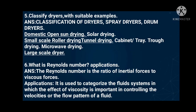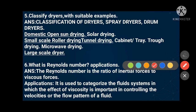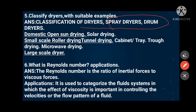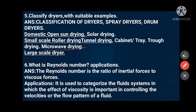The fifth question: classify dryers with suitable examples. Classifications include spray dryers and drum dryers, which are used to dry wet materials. For domestic and small-scale use: open sun drying (solar dryer), tray dryer, tunnel dryer, and microwave dryer. Large-scale dryers are also a classification. Stop the video and write this down.